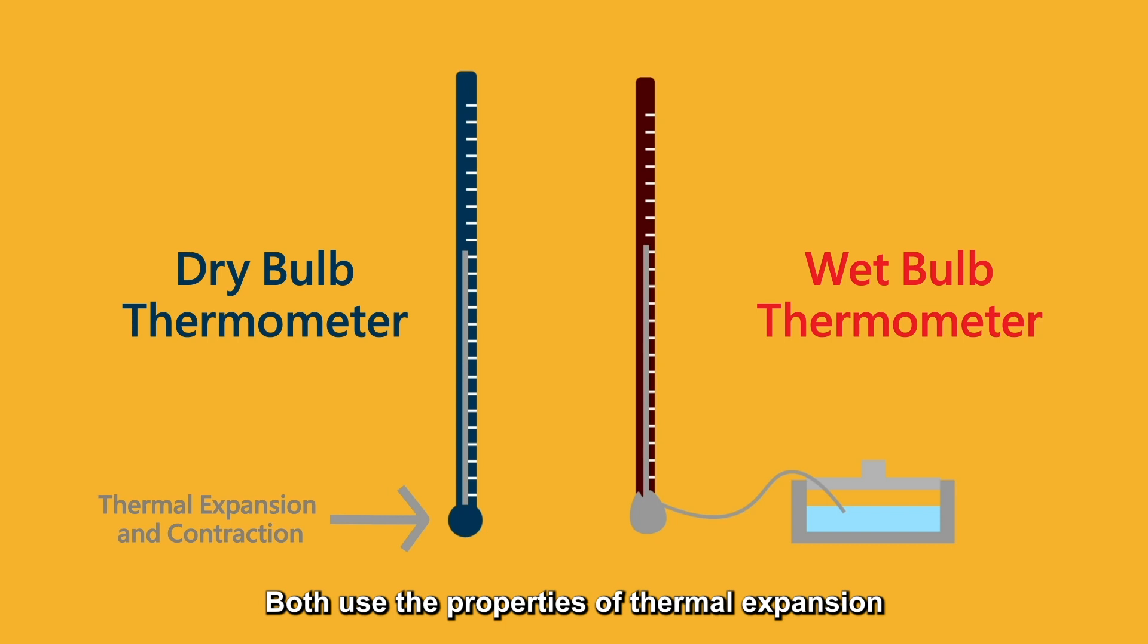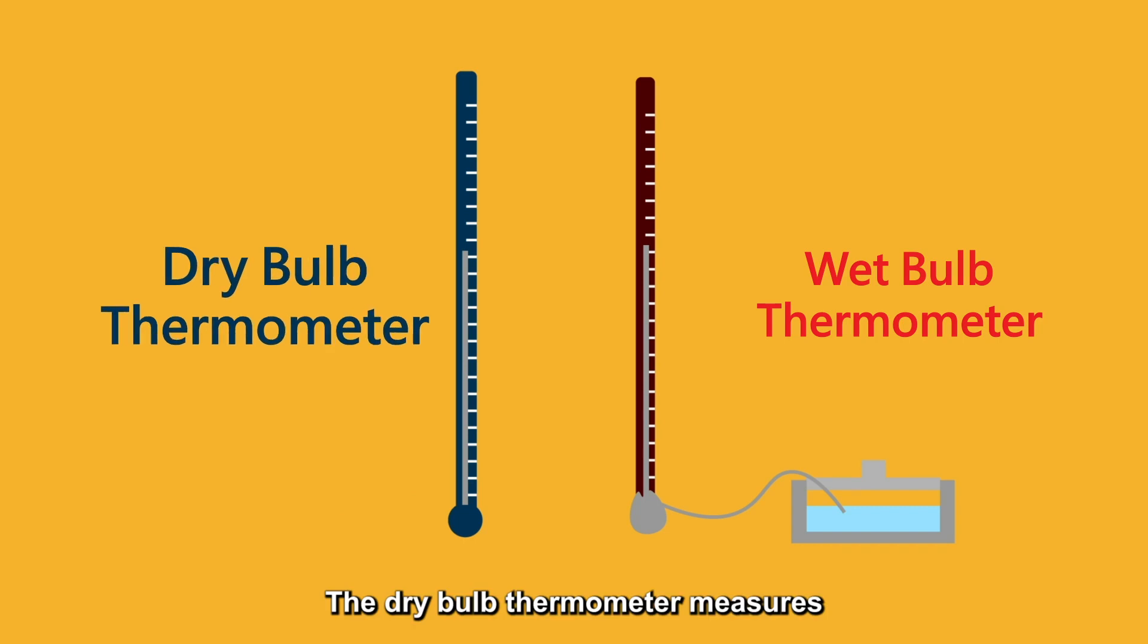Both use the properties of thermal expansion and contraction of the mercury at the bottom bulb of the thermometer to measure the temperature. Why is there a dry type and a wet type? What's the difference?